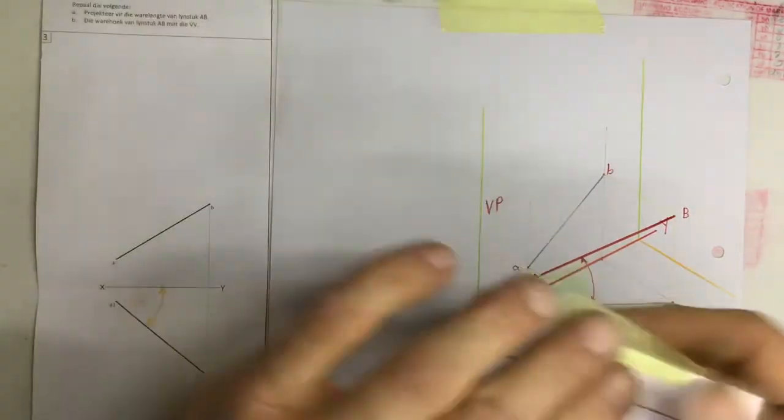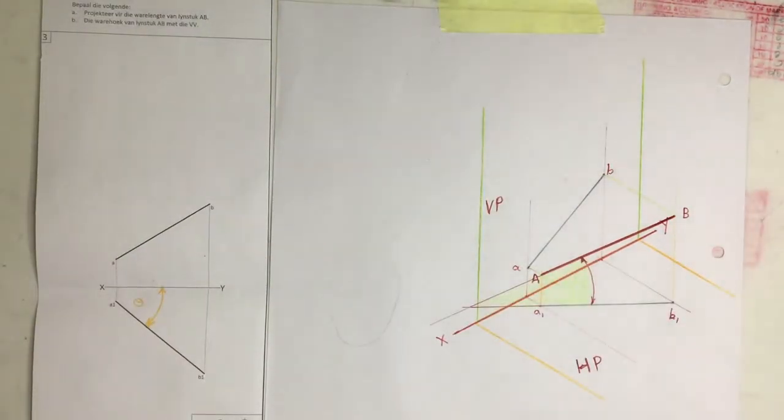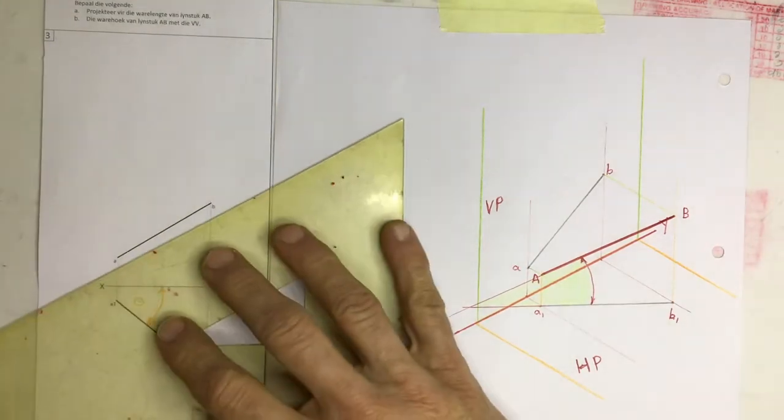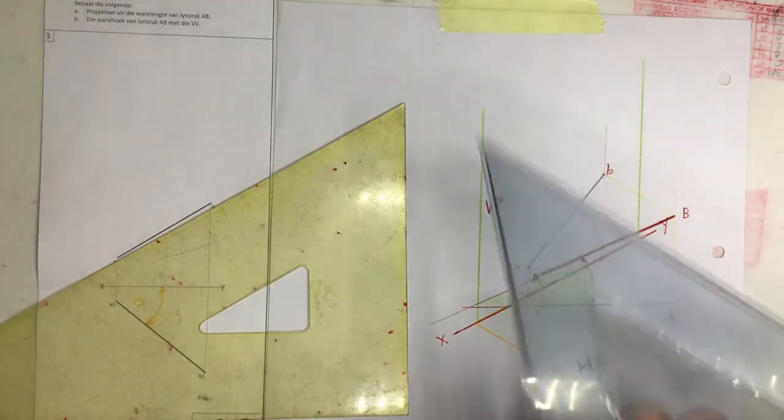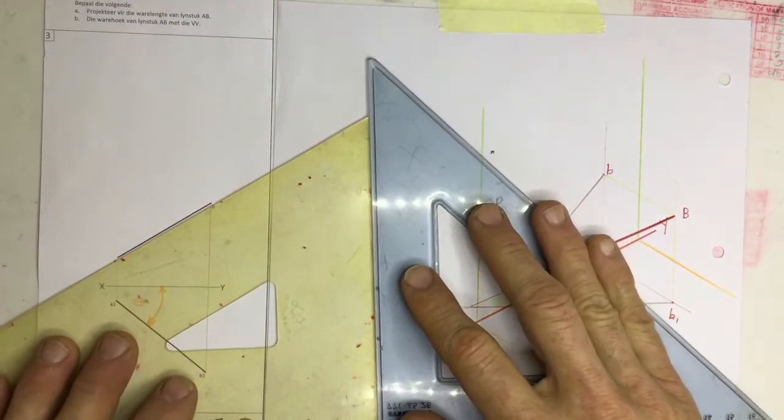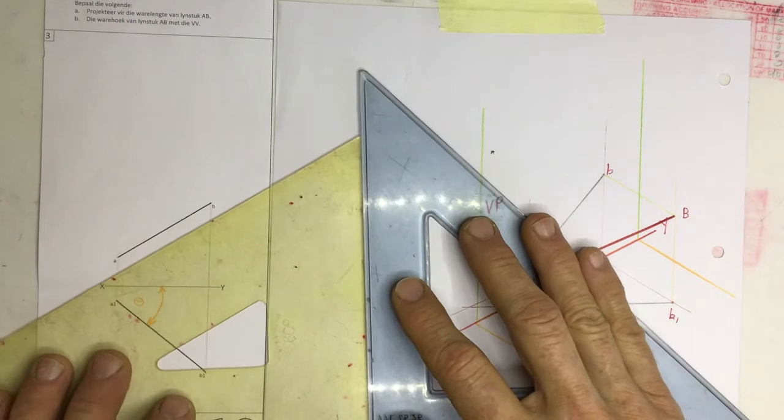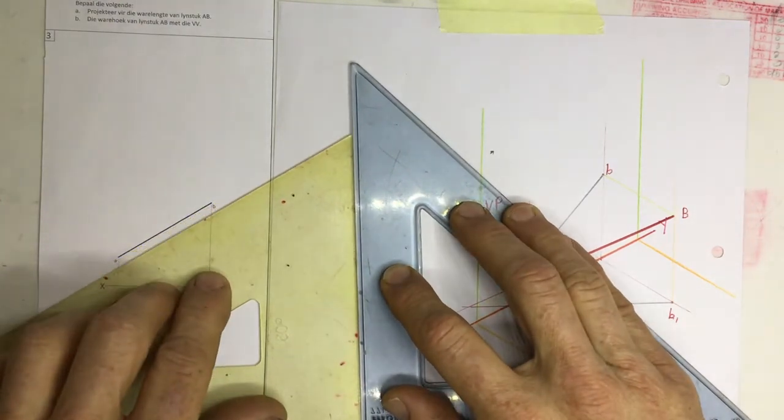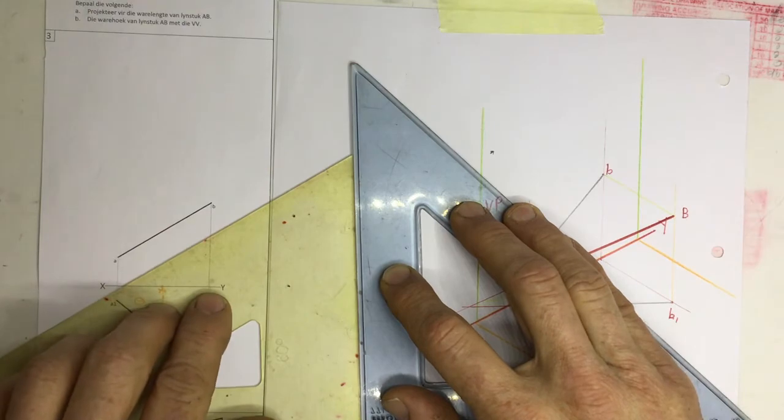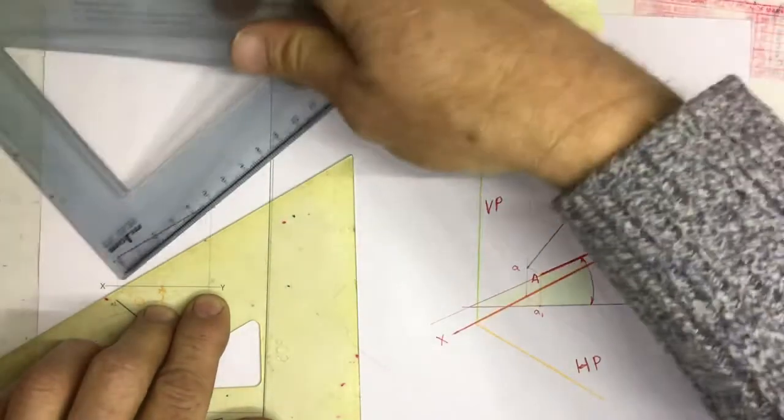Well, there are various methods of doing it. The one that they probably want you to use is to take your set square and you line it up on that line over there. And you take another set square and you get the two set squares working together so that we can do that.